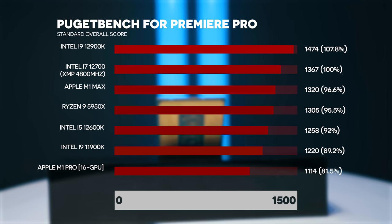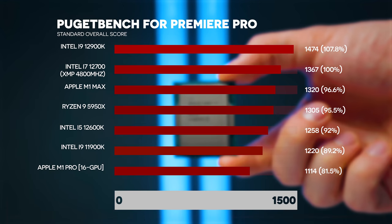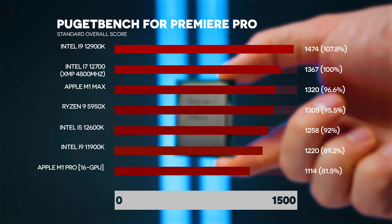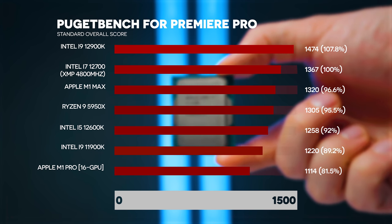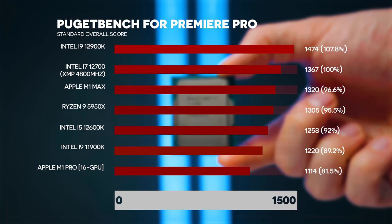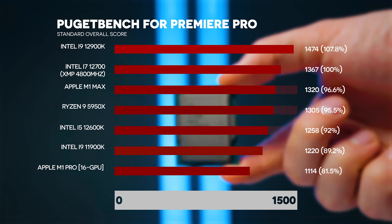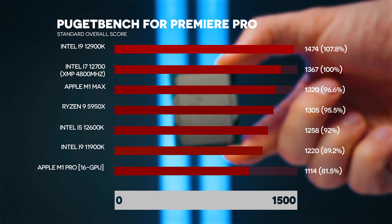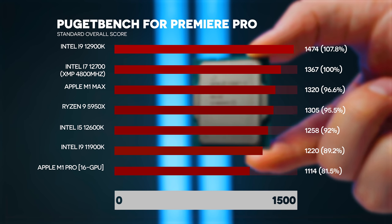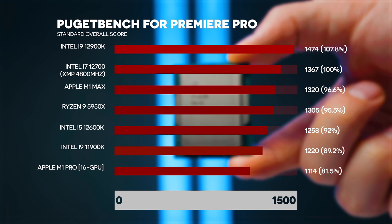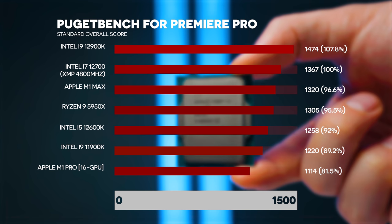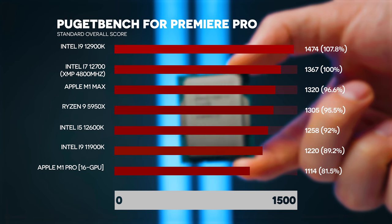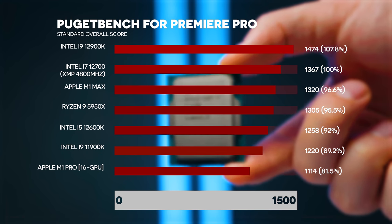Moving on to Premiere Pro. The 12900K is about 7.8 percent faster. The Apple M1 Max - very good at encoding - is about 3.4 percent slower than the 12700 in overall score. The GPU effects score is much better on our test bench because we're running an RTX 3090, whereas the Apple M1 Max doesn't have a lot of GPU power for accelerated effects, though it's very good at H.264 and H.265 live playback. The Ryzen 9 5950X is 4.5 percent slower than the 12700, and the 12600K is 8 percent slower.